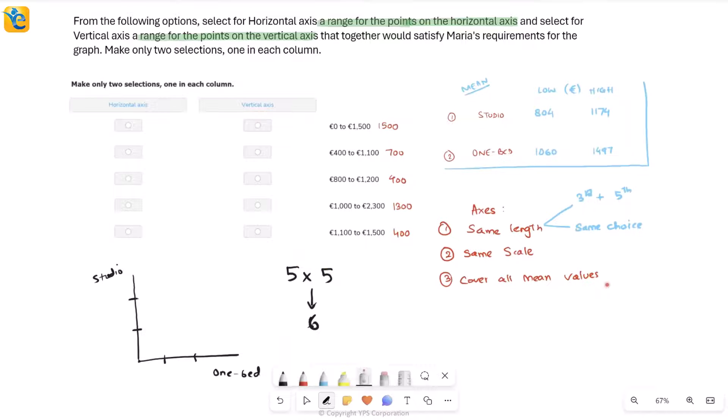Now when we have this, we just have to see which ones out of these six possibilities also satisfy the third condition. That is, you have to find the pair of choices that will cover all the mean values. I can simply start checking for these possibilities. I'll start with the first one. Let me see if this does cover both of these values or not, both of these low and high. If I see 804 and 1174, they are very well both in this range. So good. I see 1060, 1497. They are also in this range. And I am done with the very first choice. This itself has to be the answer for horizontal and vertical. If I've taken the exact same range for both of them, the length is maintained, the mean values are covered as we just checked, and the scale is also going to be the same. We're good here. We are already done.